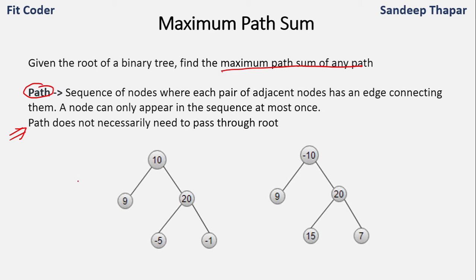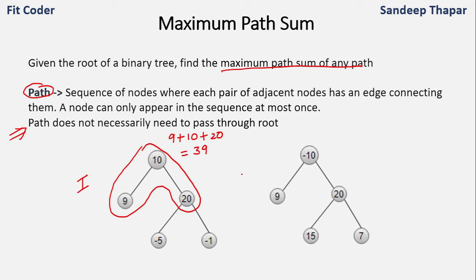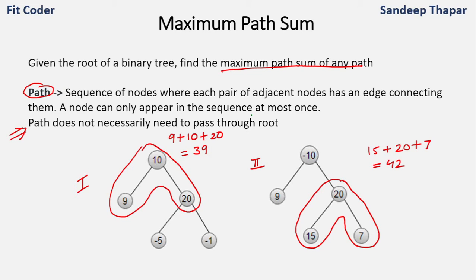In the first tree, the maximum path sum is comprised of three nodes: 9, 10, and 20, giving a path sum of 39. In the second tree, the maximum path sum is comprised of nodes 20, 15, and 7. So it is not necessary that the path passes through the root.